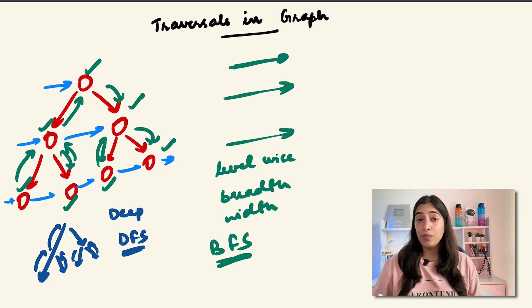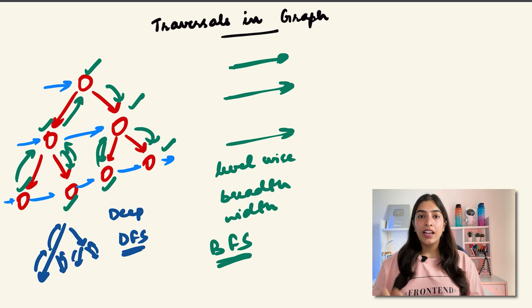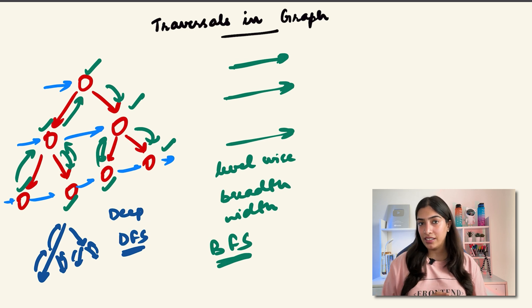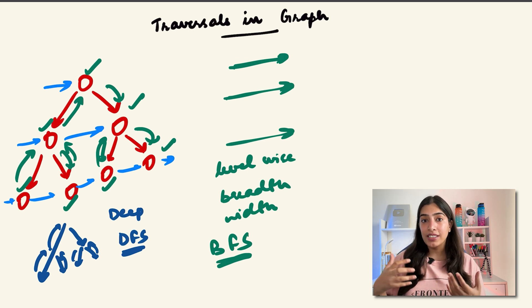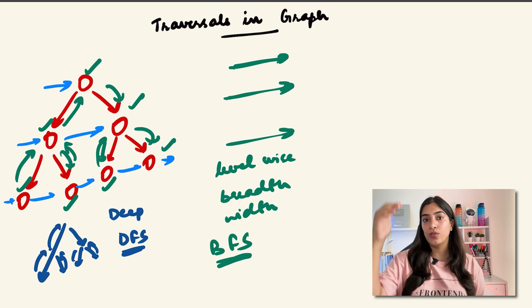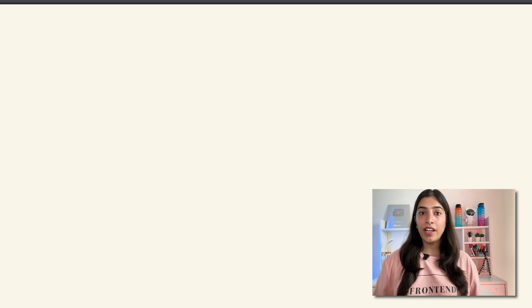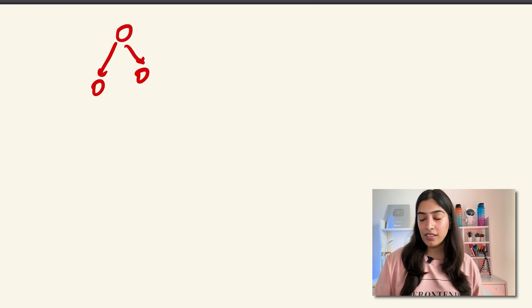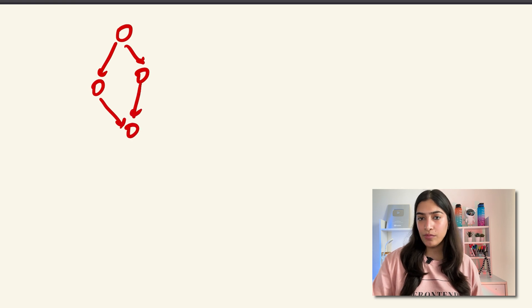In the first approach, you're going level-wise, breadth-wise, or width-wise. The algorithm that visits nodes level-wise is called BFS - Breadth First Search. In the second approach, you go deep down a branch and come back, going along the depth, which is called DFS - Depth First Search. These two algorithms, BFS and DFS, are probably the most important topics in both trees and graphs, and they can be applied to both.